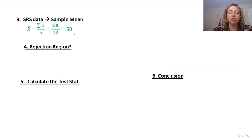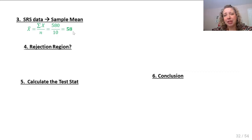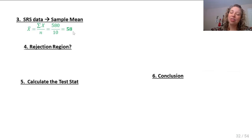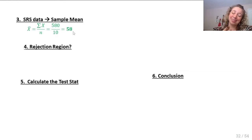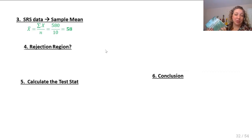The rejection region is a step we do when calculating a test by hand. When doing it on a computer we usually skip this step and go right to the p-value — steps four and five are usually combined on a computer. Most software doesn't actually have capability for a one-sample Z test since we rarely do them in real life. As we move into T tests, ANOVA, and regression, those are done in software. The rejection region is based on the normal curve in the back of the textbook.